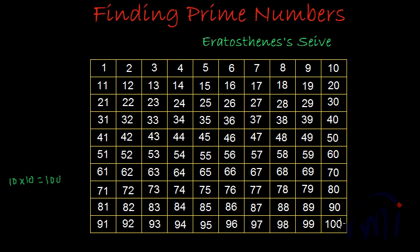There is no need to check divisibility by 11, 12, 13, 14, and so on. Why? Because 10 multiplied by 11 is 110, which is bigger than 100, and 10 multiplied by 13 is 130, also bigger than 100. So it is useless to check divisibility by any number bigger than 10. We will start the procedure and then you will understand why.